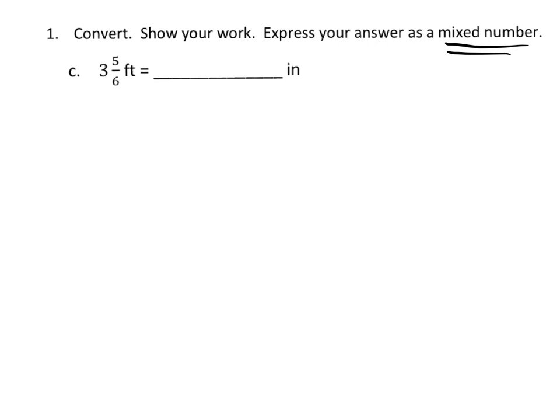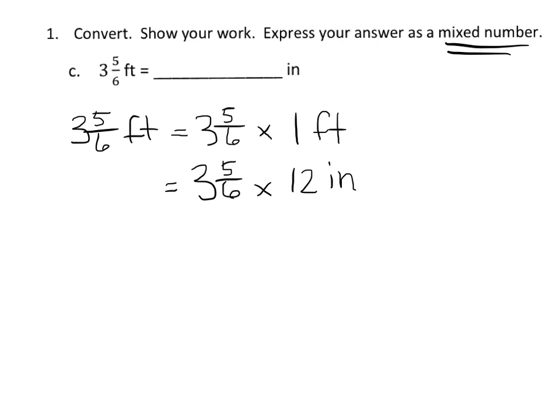So we're going to continue that technique that we learned in the last video. We have three and five-sixths feet, and that means we have three and five-sixths times one foot. Because we're converting into inches, we want to change one foot into inches, so that's going to be one foot is equal to 12 inches.